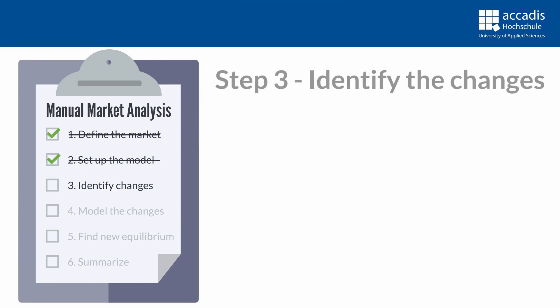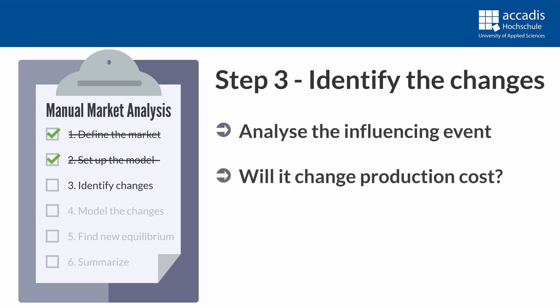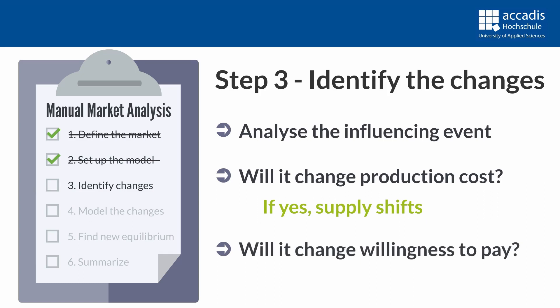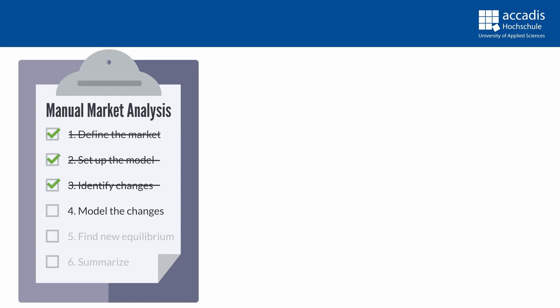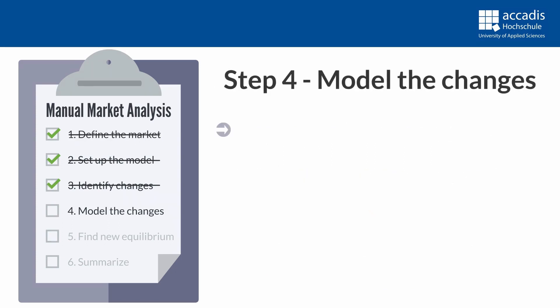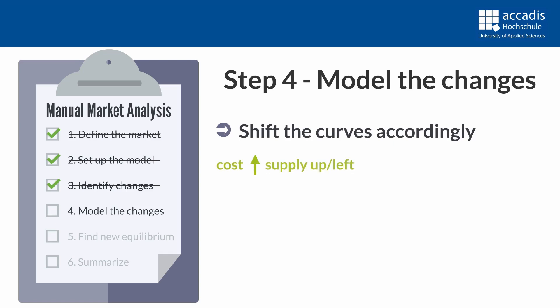Step 3: Identify the changes. You will be confronted with an event or development that will have an influence on the market that you analyze. Will that change production costs? If yes, the supply curve is going to shift. Will it change the willingness or ability to pay for our demanders? Then it will shift demand. Step 4: Model the change. Shift the curves and see whether a shortage or surplus results. If the event increases production costs, you shift the supply curve up and to the left, and oppositely if costs decrease. You shift demand up and to the right if the willingness to pay increases, and vice versa.